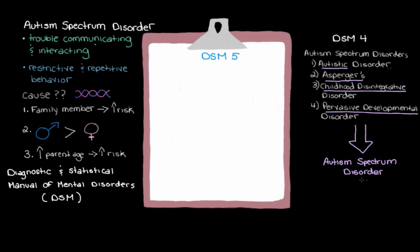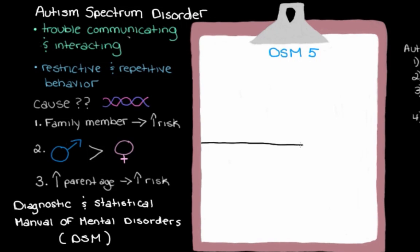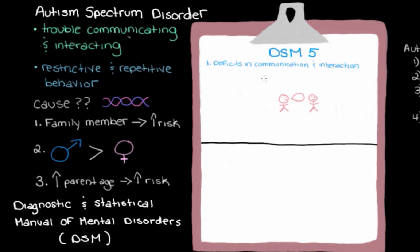In the DSM-5 there's just one Autism Spectrum Disorder, and kids will fall in different places along this spectrum. The current requirements for diagnosis are split into two main categories, which are actually the main signs of Autism Spectrum Disorder. The first category is Persistent Deficits in Social Communication and Interaction, which basically means that the child's social development is not quite tracking along the way it should be. A child would need to display issues with their social interactions, and there are a few specific ways they would need to show this deficit.